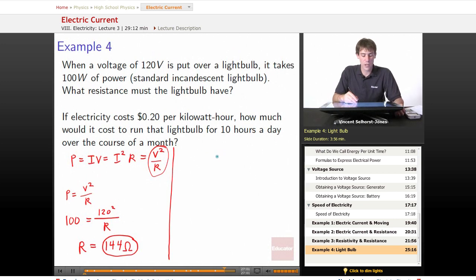if electricity costs 20 cents per kilowatt hour, a reasonable price for electricity, a little high in some places, a little less than what it is in other places, how much would it cost to run that light bulb for 10 hours a day over the course of a month? So if it's 20 cents per kilowatt hour, and it's 100 watt bulb,